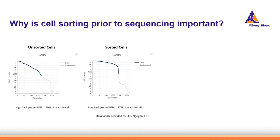Let's have a look at some exciting data. Unsorted cells and sorted cells have been compared in regards to their background. It was found that unsorted cells had around 50% of reads actually coming from a cell, with the rest due to high background RNA. Sorted cells, on the other hand, had about 97% of reads coming from the cell and only low background RNA, showing how important cell sorting prior to sequencing is.